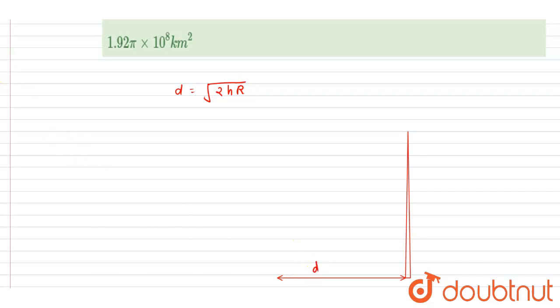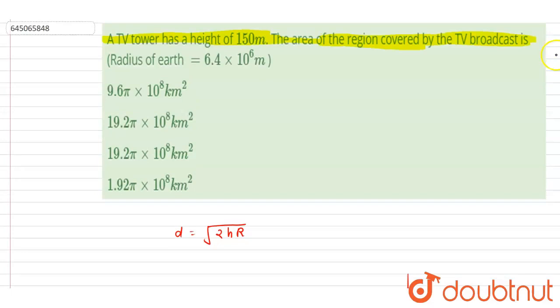So if I write down the area, it will be πd². Up to this much area the signal will be received here. So I will write down 2πr², it will be 2hR. Put the value. So if you see, h is given in the question, it is 150, right?